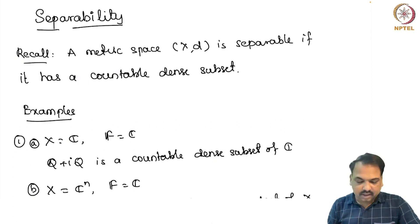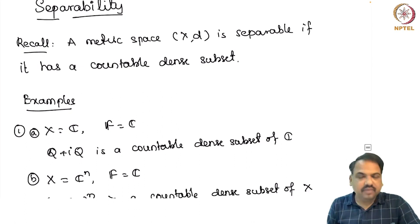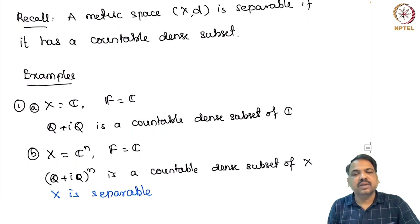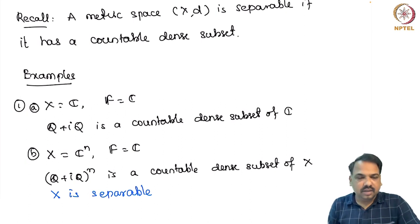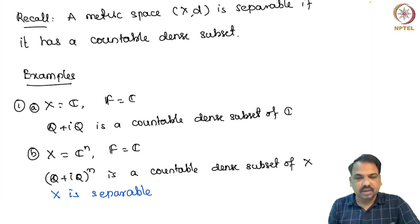Let us quickly recall that a metric space X with metric D is said to be separable if it has a countable dense subset. For example, if you take X to be the complex field over F equal to C, then this is a vector space, and Q plus iQ is a countable dense subset of C, where Q is the set of all rational numbers.